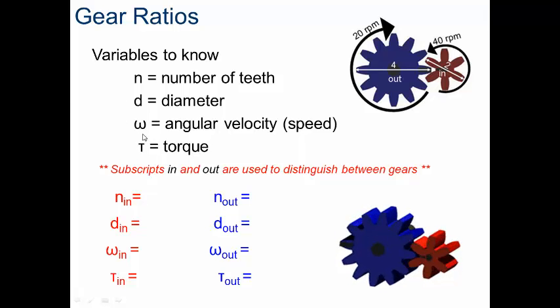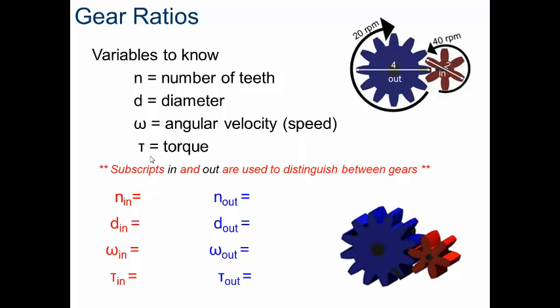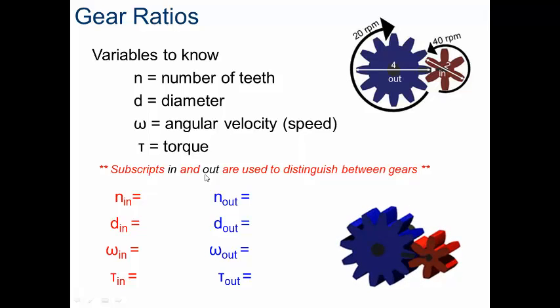This letter T is actually the Greek letter tau, and it stands for torque, or basically how much rotational effort you need in the system. To differentiate between our driver gear and our driven gear, we use the subscripts in and out just to distinguish between them.